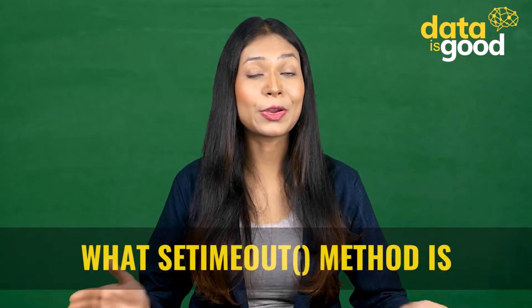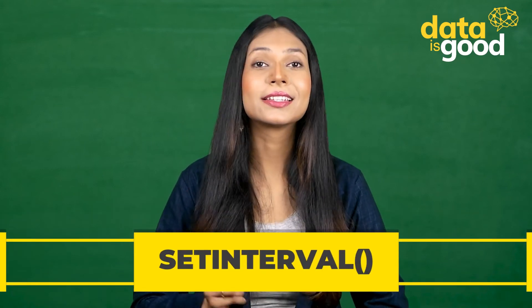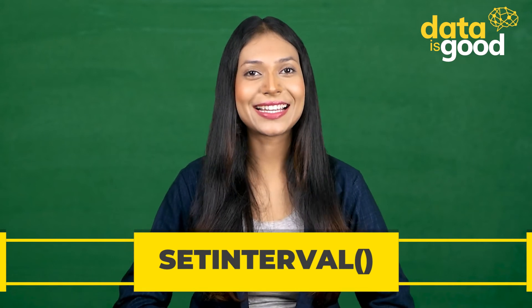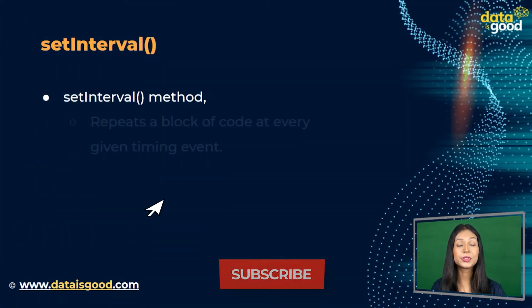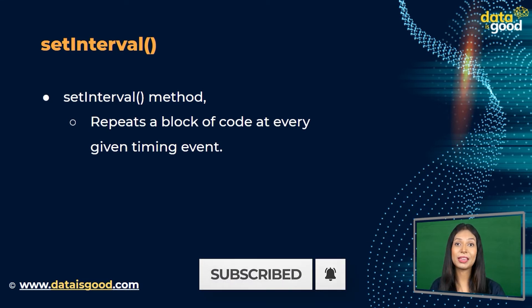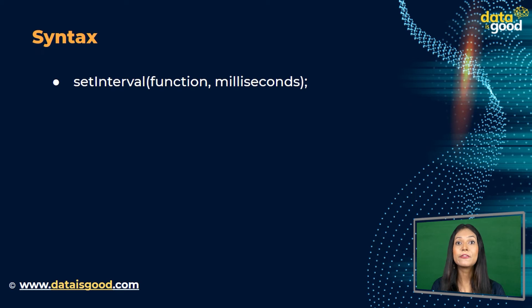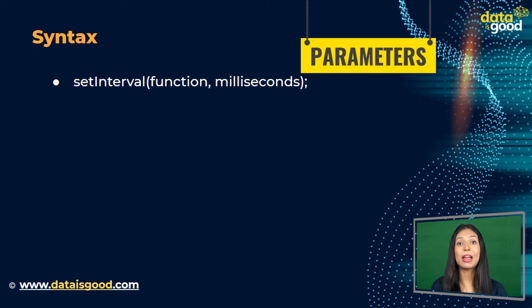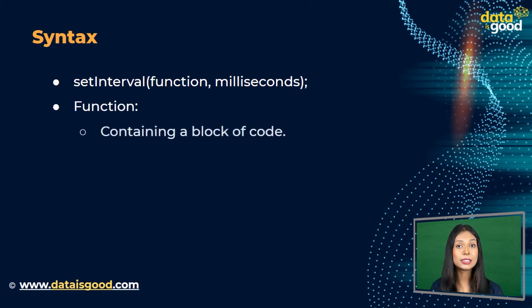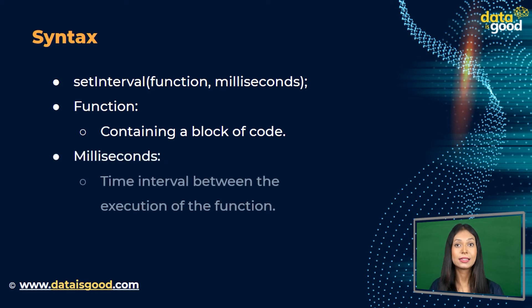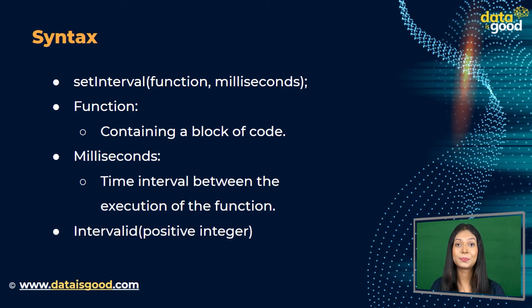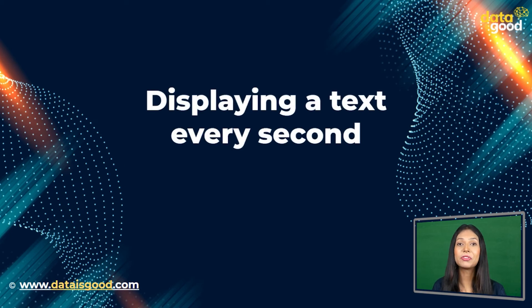Now we are going to learn a similar concept called setInterval. The setInterval method repeats a block of code at every given timing event. The commonly used syntax is: setInterval(function, milliseconds). Its parameters are: function — a function containing a block of code, and milliseconds — the time interval between executions. The setInterval method returns an interval ID, which is a positive integer.